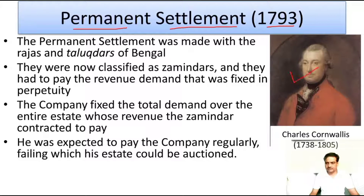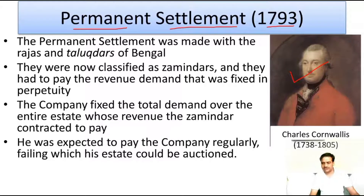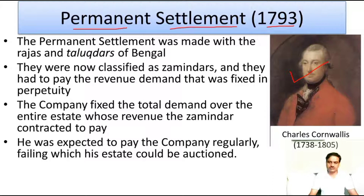The Permanent Settlement was introduced in India by Charles Cornwallis, who was the Governor General of India at that time. Cornwallis had earlier fought on the side of the British against the 13 colonies of the USA, but suffered defeat there, and was then sent to India as Governor General. He remained in that position for many years and was sent twice to India as Governor General. When he came the first time, he introduced the Permanent Settlement, and he is also called the father of civil service in India.